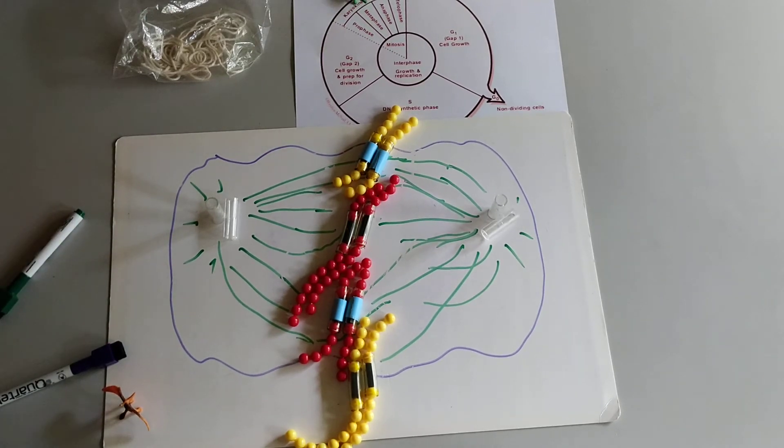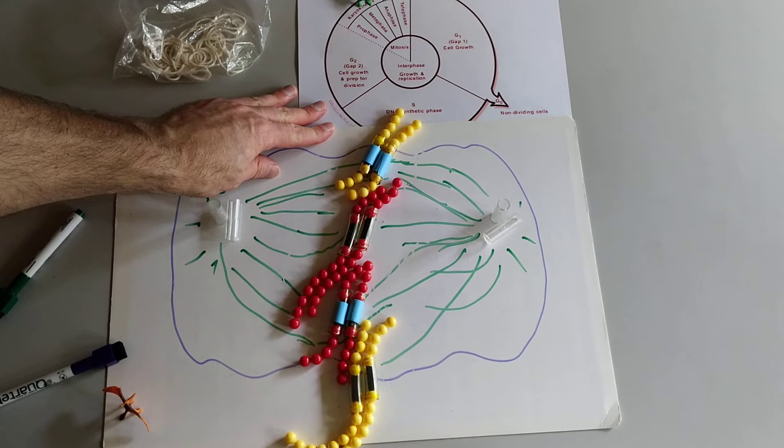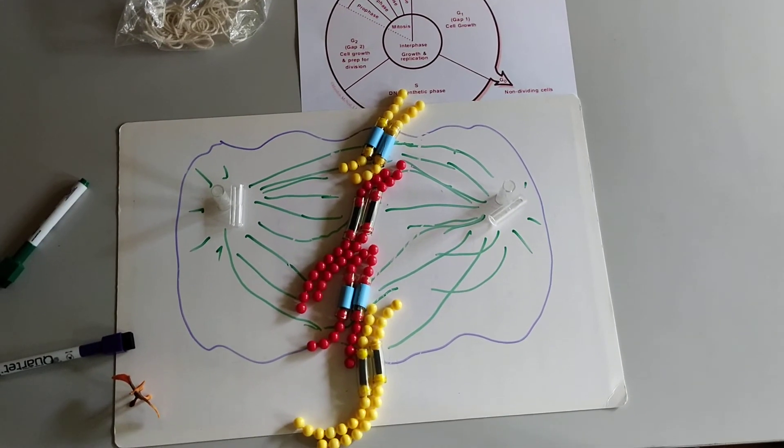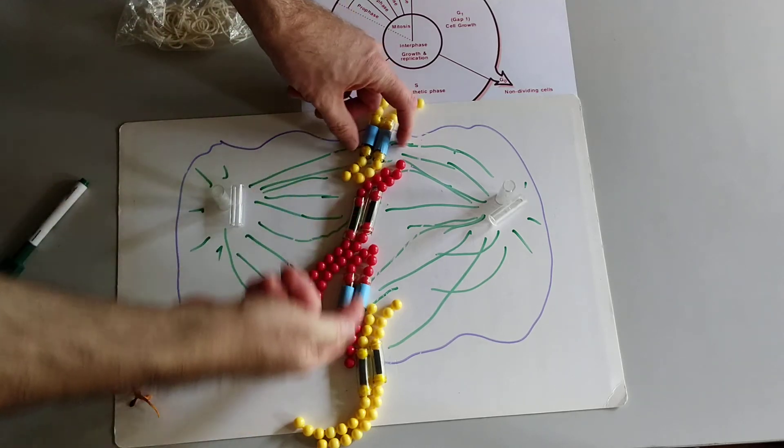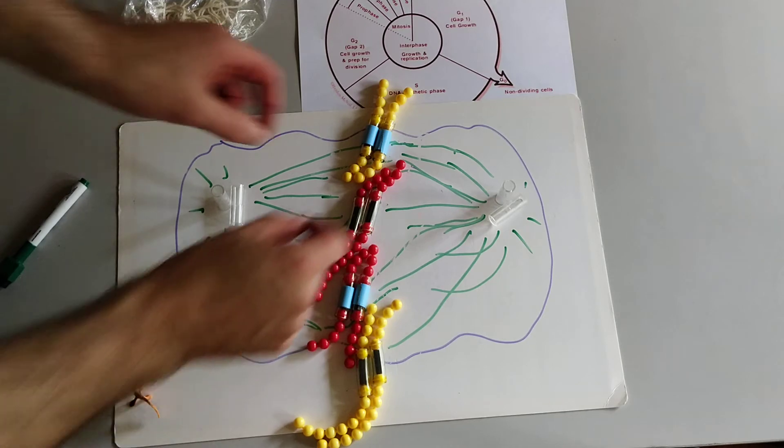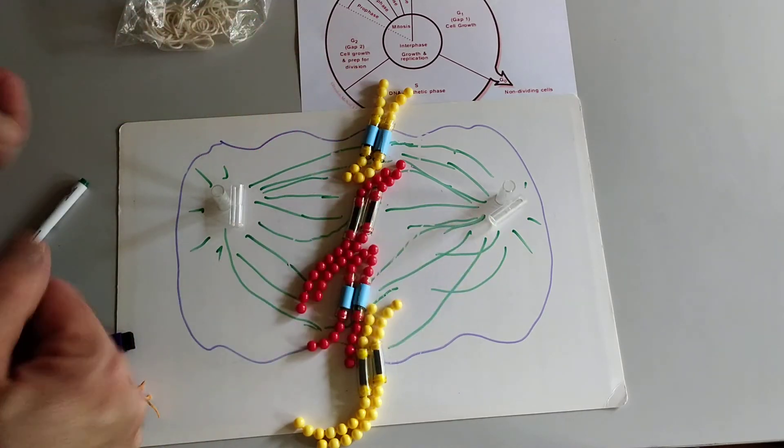This is metaphase. The chromosomes are lined up along the equator of the cell. The spindle fibers are attached and have approximately equal tension on them.